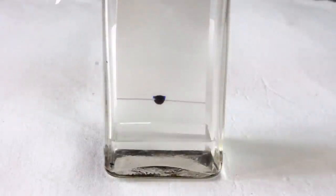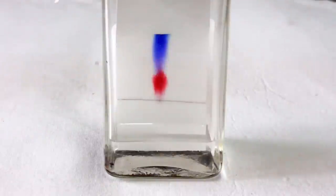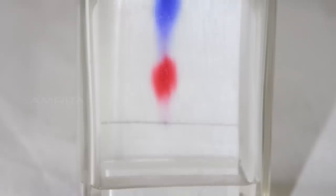Keep the chamber undisturbed for some time. Notice the rise in solvent along with the mixture of red and blue inks. When the solvent has risen, you will notice two different spots of blue and red colors on the filter paper.